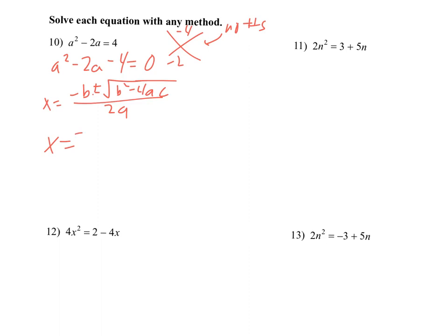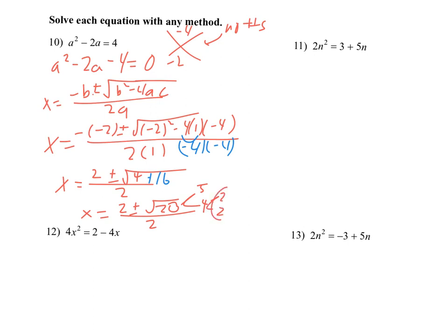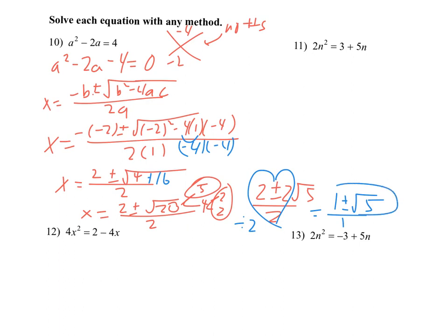In this case, our b is negative 2. So I put negative negative 2 plus or minus the square root of negative 2 squared minus 4 times 1 times negative 4, all over 2 times 1. That negative negative 2 turns into a positive 2, plus or minus the square root of 4. And negative 4 times 1 times negative 4 is actually a positive 16 right there, all over 2. That gives the square root of 20. I don't know the square root of 20, so I'll break it down as 5 and 4, giving twin 2s. So I write it as 2 plus or minus 2 rad 5 all over 2. Then reducing by dividing everything by 2 gives me 1 plus or minus radical 5.